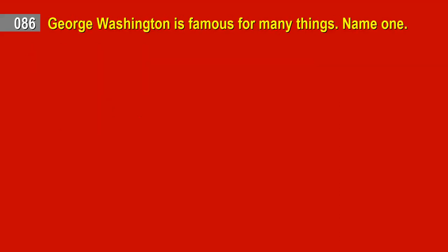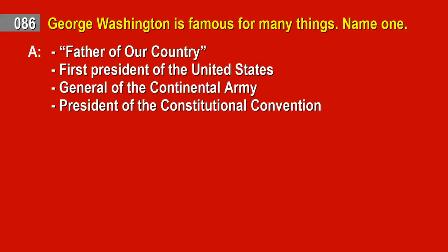Question 86. George Washington is famous for many things. Name one. Answer: Father of our country. First President of the United States. General of the Continental Army. President of the Constitutional Convention.